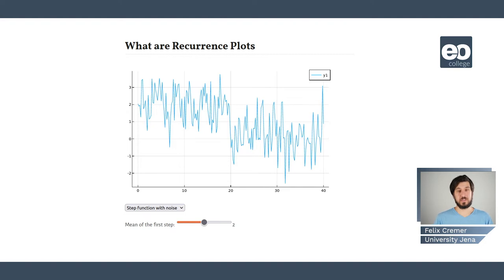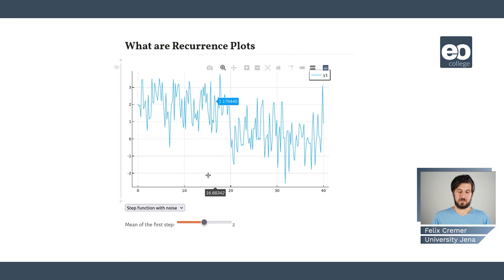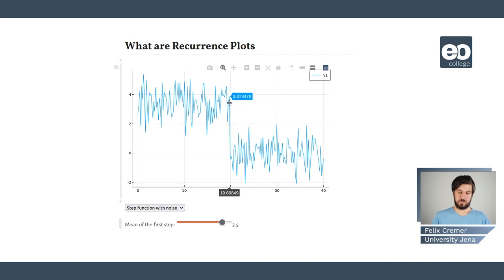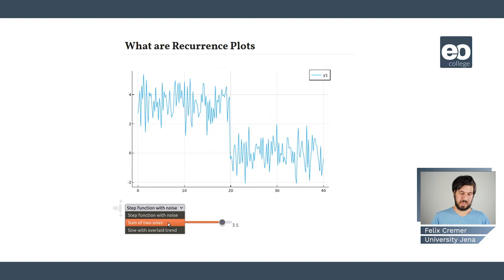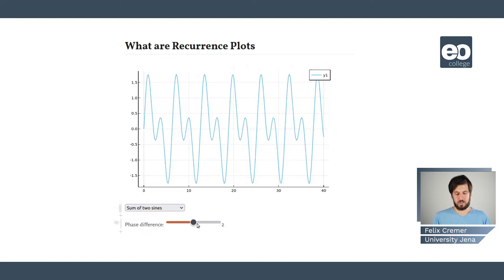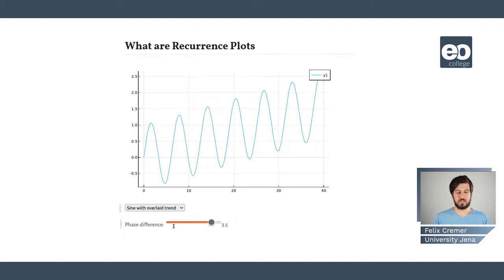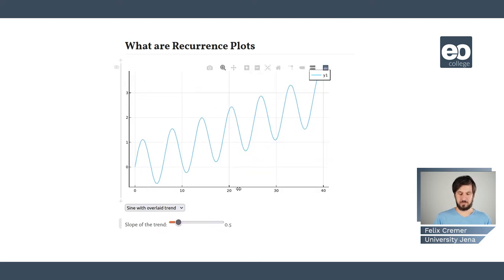In this tutorial, we're going to look at three different time series that are indicative of time series you could also see in Sentinel-1 data. The first one is a step function with noise — here we can select the mean of the first step to either decrease or increase the cliff between the different parts of the time series. Then we're looking at the sum of two sine waves, which give nice interference patterns, and here we can select the different phase differences. And then we're also looking at the sine with an overlay trend, where we can select the difference in the slope of the trend to either have a very strong slope or a rather slow slope.